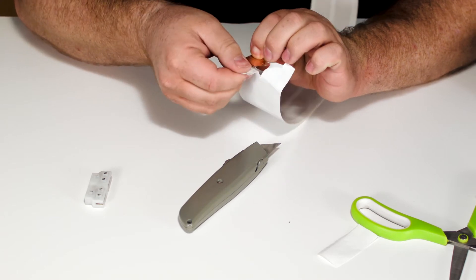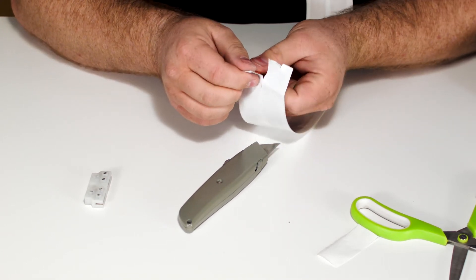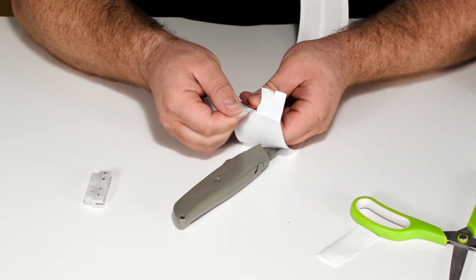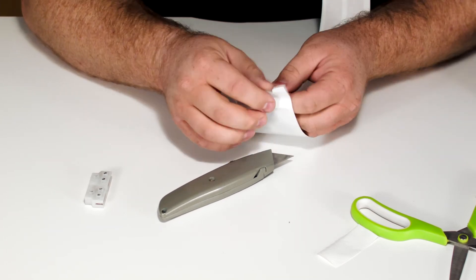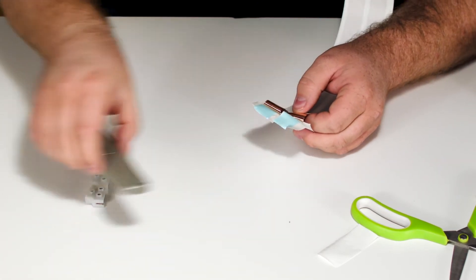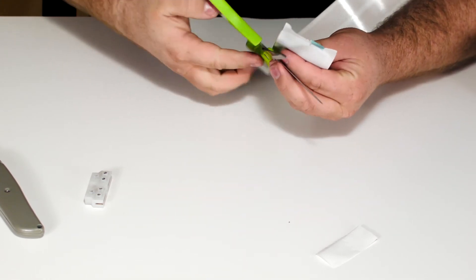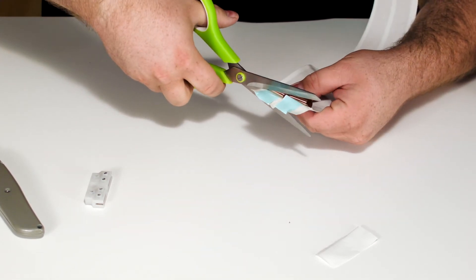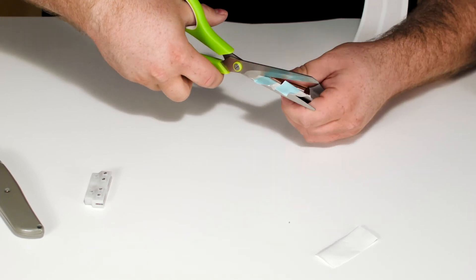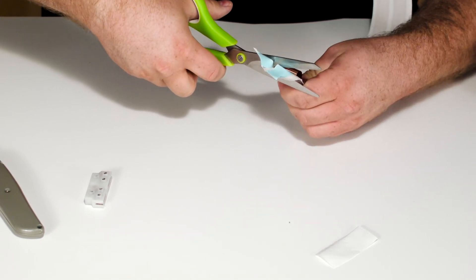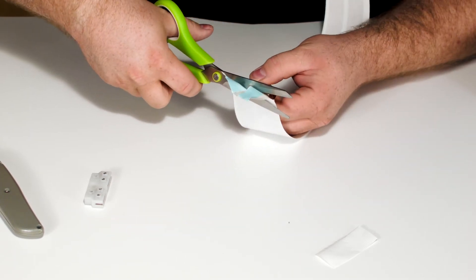Peel this one back, and then trim the paper backing. Be careful not to cut your copper conductors or you'll have to start all over.